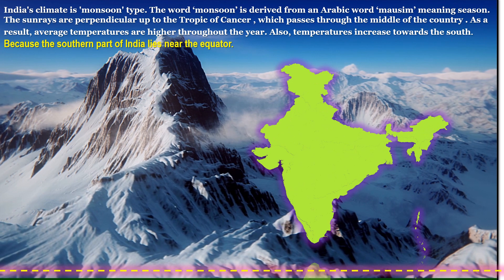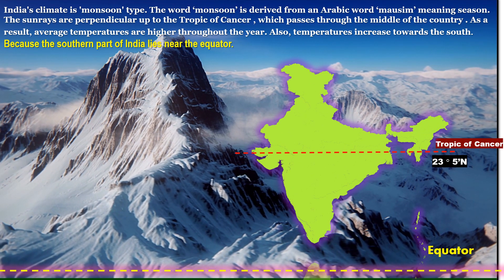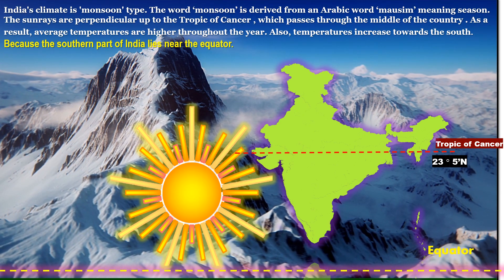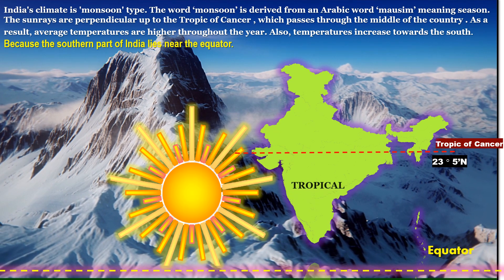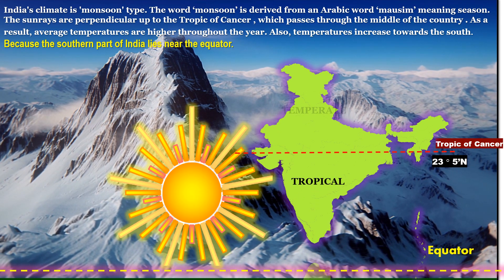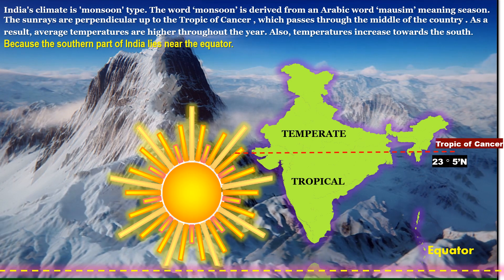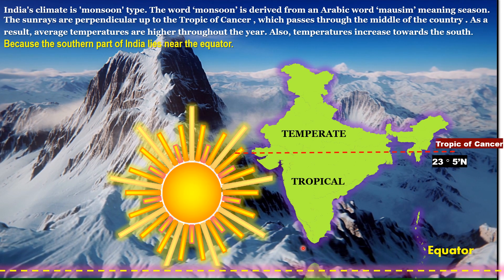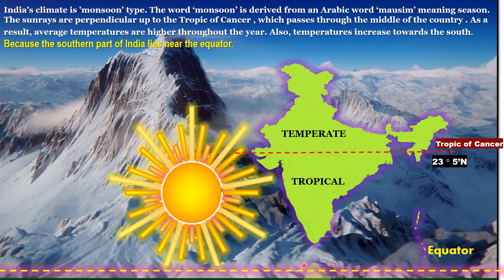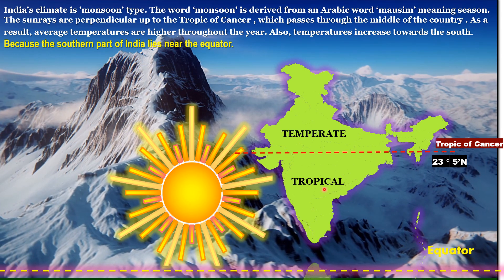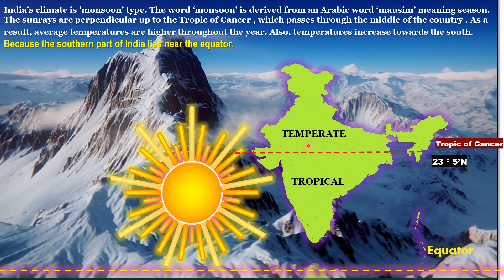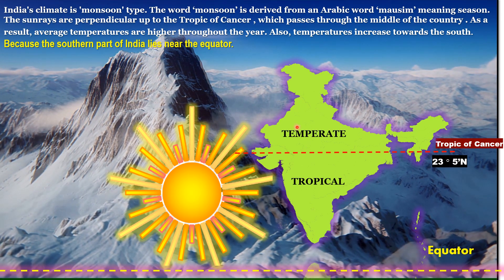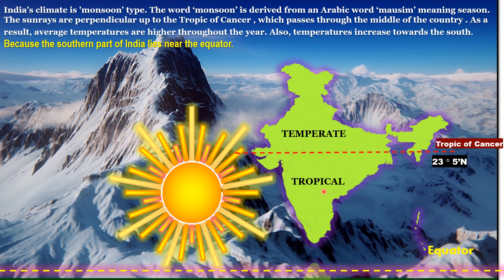The sun's rays are perpendicular up to the Tropic of Cancer, which passes through the middle of the country. As a result, average temperatures are higher throughout the year. Temperature also increases towards the south because the southern part lies close to the equator. The Tropic of Cancer, at 23.5 degrees north latitude, divides India into two equal parts: the northern temperate zone and the southern tropical zone.